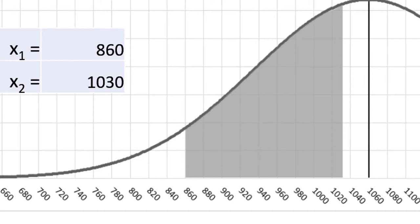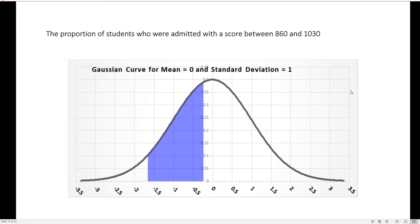Let's take a look at how that would translate to a standard normal curve. On a standard normal curve, this is what it would look like. We would want to know the area in between this value and this value, and I'll show you how to get to those two values.